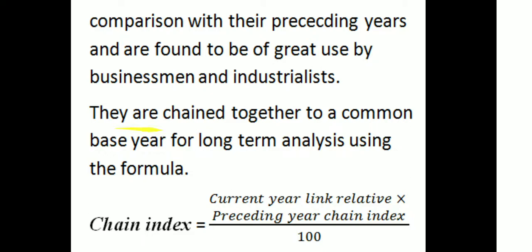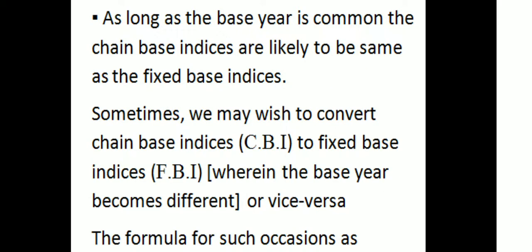They are chained together to a common base year for long-term analysis using the formula: Chain Index = (Current Year Link Relative × Preceding Year Chain Index) / 100. As long as the base year is common, the chain-based indices are likely to be the same as Fixed-based indices.